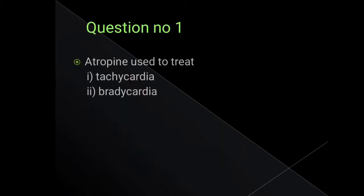Question number 2: Atropine is used to treat what — tachycardia or bradycardia? Tachycardia increases heart rate and bradycardia decreases heart rate. Atropine, as a muscarinic antagonist, is used to treat bradycardia.